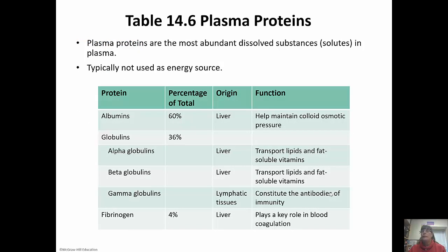Plasma proteins are the most abundant dissolved solids in the plasma. They're usually not used as an energy source. These are going to be proteins like albumins, globulins, and fibrinogen. Even though fibrinogen is the lowest in percentage total, it's going to be really important in blood clotting, and we're going to talk about that in a minute.